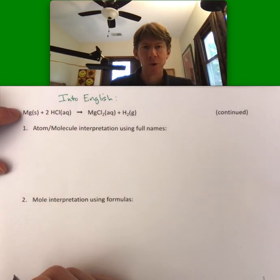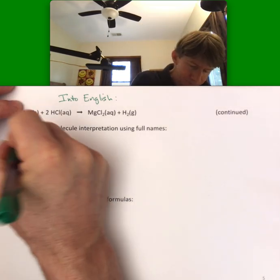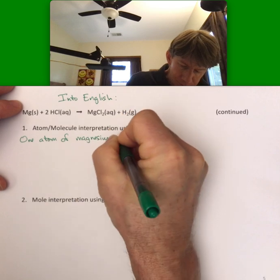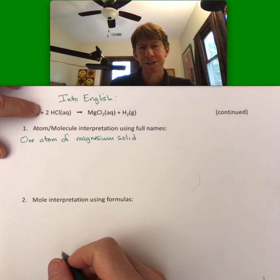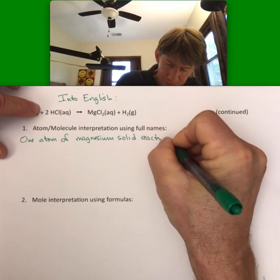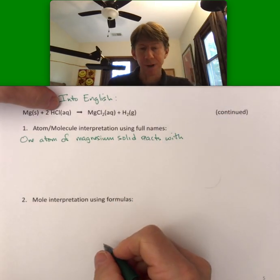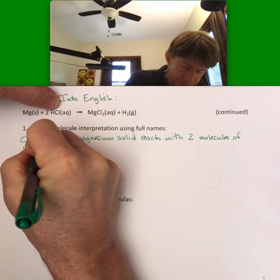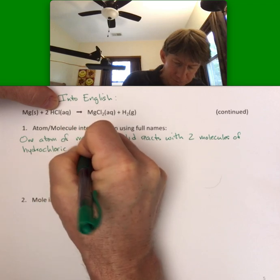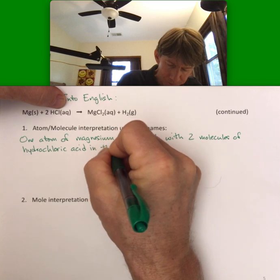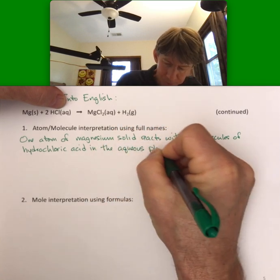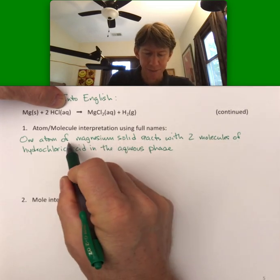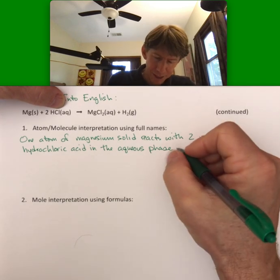What we'd say is that one atom of magnesium solid, the plus sign translates as reacts with two molecules of hydrochloric acid in the aqueous phase. And you could also write two molecules of aqueous hydrochloric acid, if that works. You could also do solid magnesium here. And we'll try that on the product side, I think. To produce, that's what the arrow translates as.